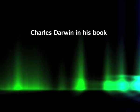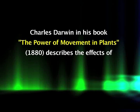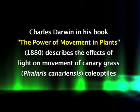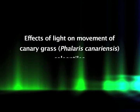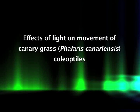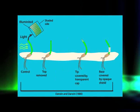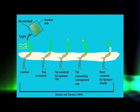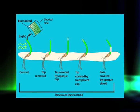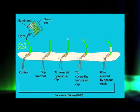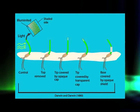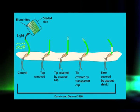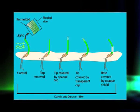Charles Darwin, in his book 'The Power of Movements in Plants,' describes the effect of light on movement of canary grass (Phalaris canariensis) coleoptyles. When unilateral light shines on the coleoptyles, it bends in the direction of light. If the tip of the coleoptyle was covered with aluminum foil, no bending would occur towards the unilateral light. However, if the tip was uncovered but the portion just below the tip was covered, exposure to unidirectional light still resulted in curvature towards the light.